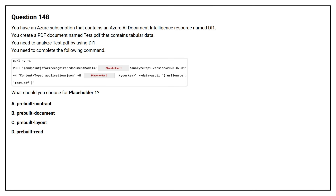Question number 148. You have an Azure subscription that contains an Azure AI Document Intelligence resource named DI1. You create a PDF document named test.pdf that contains tabular data. You need to analyze test.pdf by using DI1 and complete the following command. What should you choose for placeholder 1?